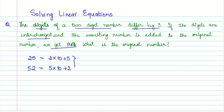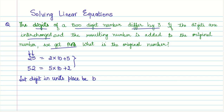The digits of the two-digit number differ by 3. We don't know both digits, but we know the relationship between them — one is the tens digit and the other is the units digit. We need to assume one of the digits. Let the digit in the units place be B.